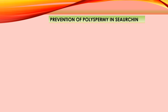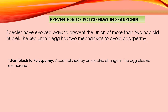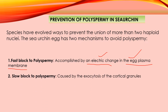Every animal has a prevention mechanism for polyspermia. In sea urchin, polyspermia is prevented by two mechanisms. The first is the fast block to polyspermia, which is accomplished by electrical changes in the egg plasma membrane — specifically, the change in membrane potential. Membrane potential is the difference in charge inside and outside of the egg plasma membrane. The second mechanism is the slow block to polyspermia, caused by exocytosis of cortical granules, mediated by calcium ions. In today's video we will describe the fast block.